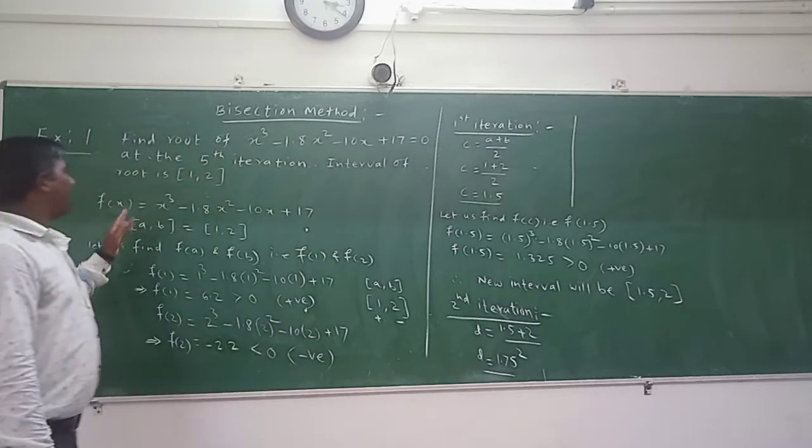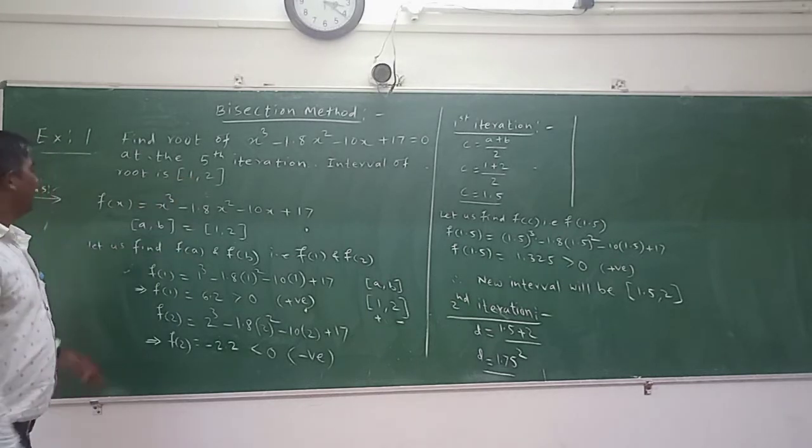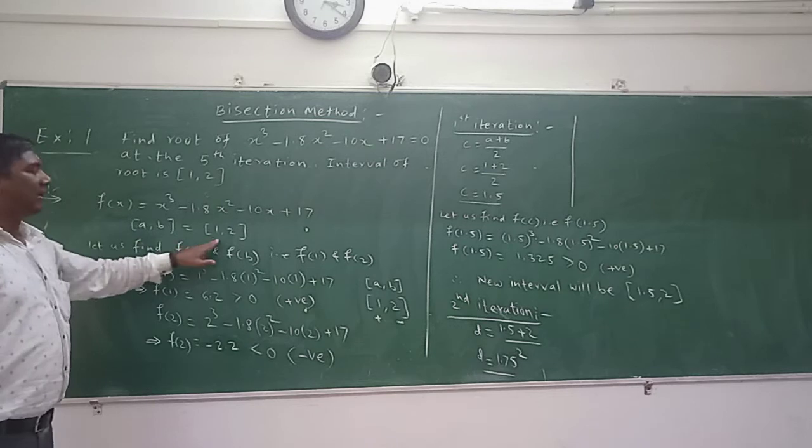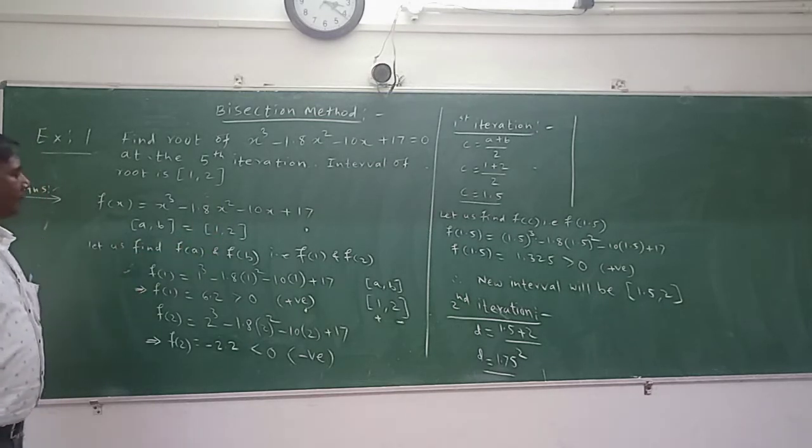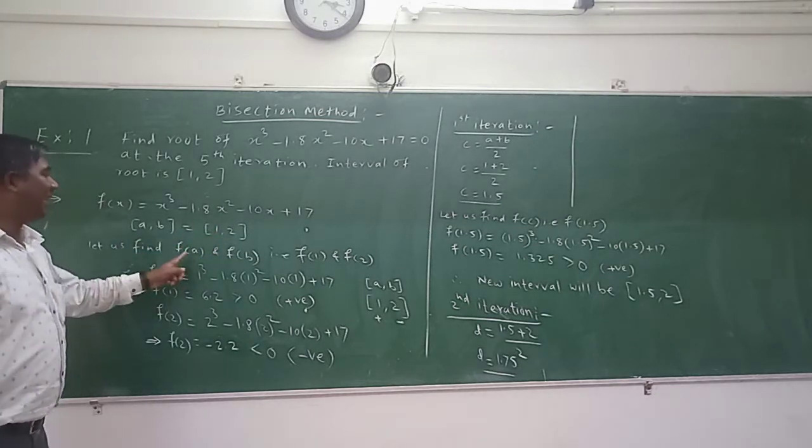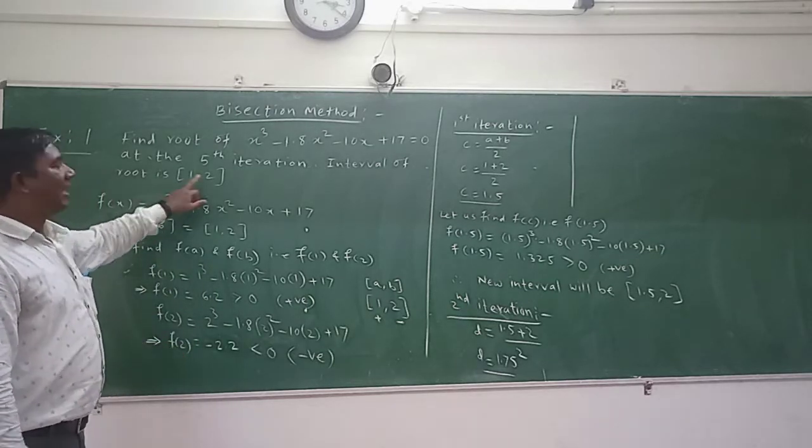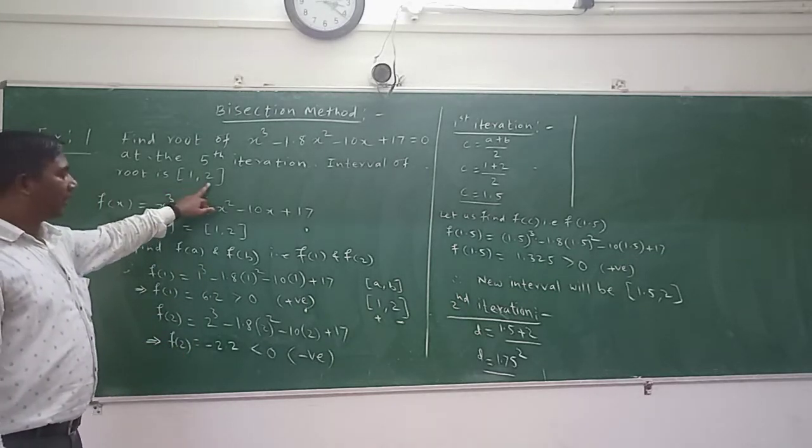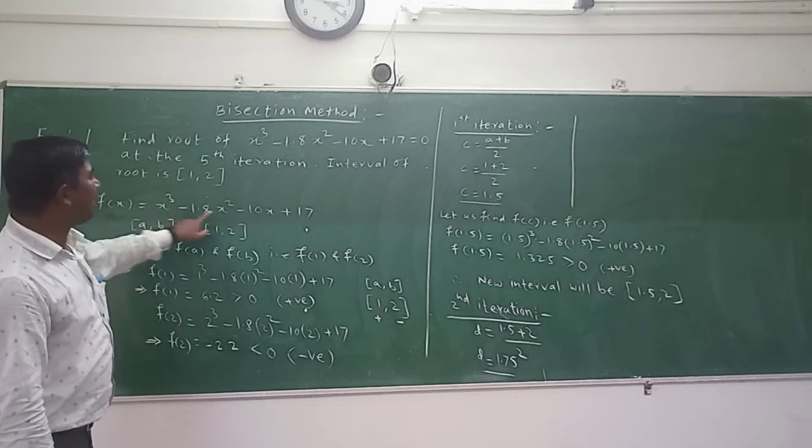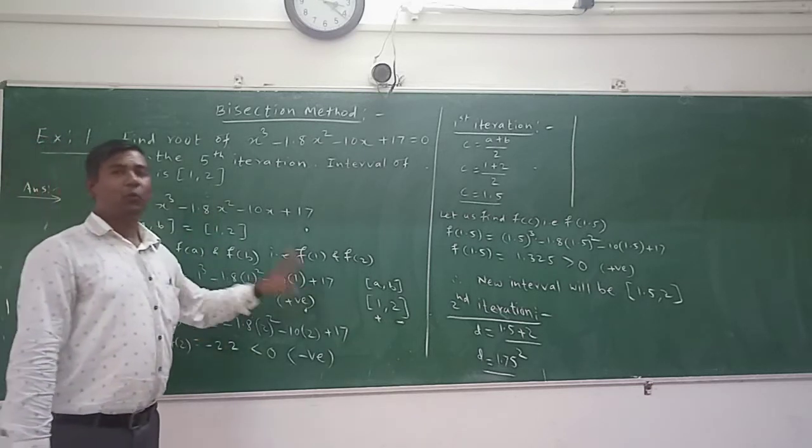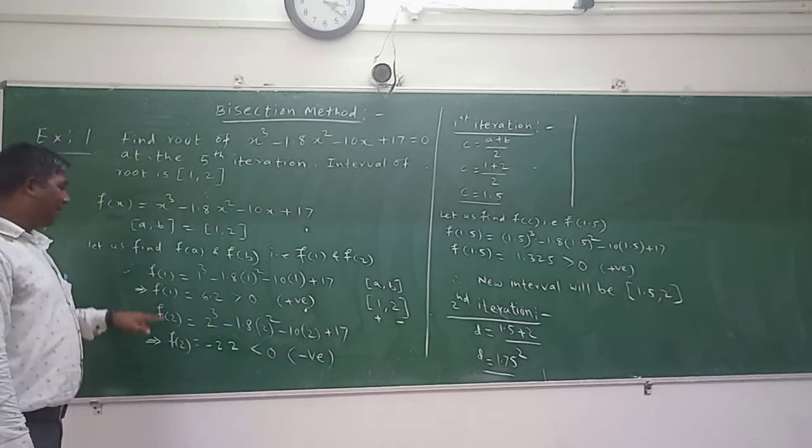So it is given to you in this problem. I have written interval 1 to 2. So what will we do? You will find f of a and f of b, means you will find f of 1 and f of 2. We will just replace the value of x once by 1 and once by 2.